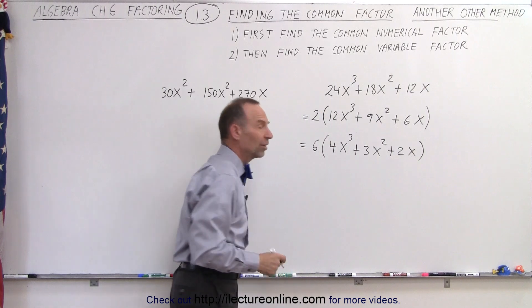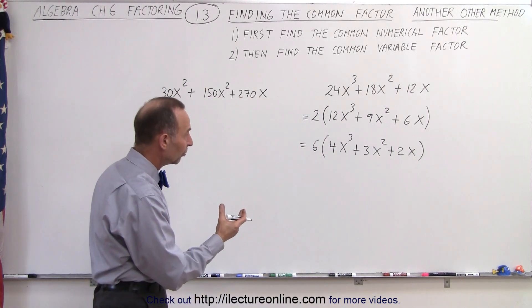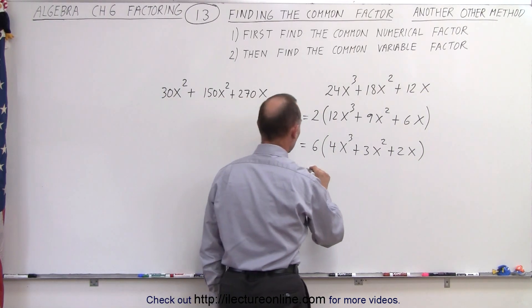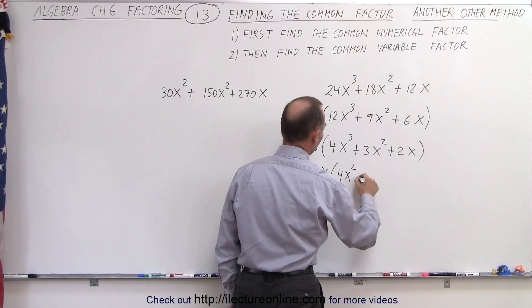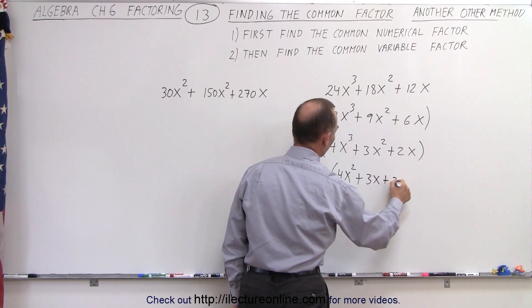Finally, we can see that from the variables, we can pull out an x on all three terms, so this can be written as 6x times (4x² + 3x + 2).